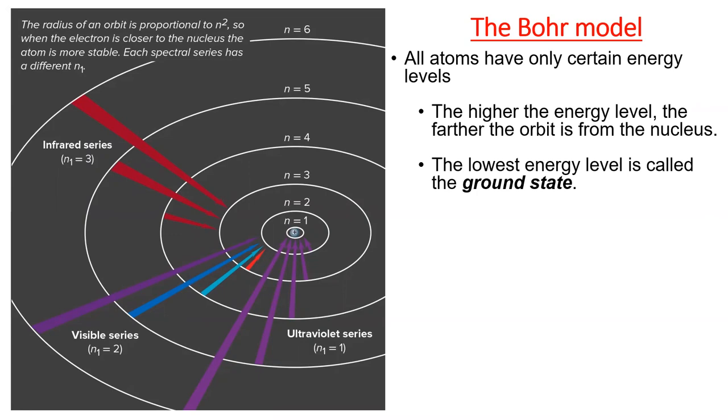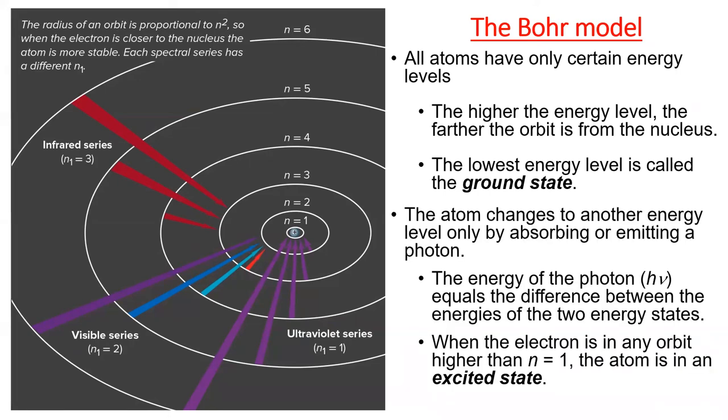To summarize the most important points of today, think of the Bohr model of the atom, the solar system model of the atom. All atoms have only certain energy levels that their electrons can live in. The higher the energy level, the further away it is from the nucleus and the higher the potential energy of an electron in that energy level. The lowest energy configuration is called the ground state. Electrons can only transition between energy levels by absorbing or emitting light. The energy, h times nu, of a photon corresponds to the difference between two energy levels. When an electron lives in a higher energy level, the atom is considered to be in an excited state.